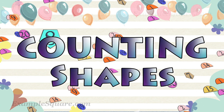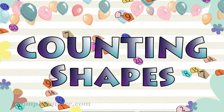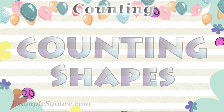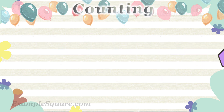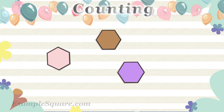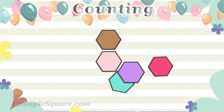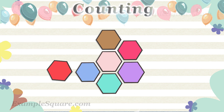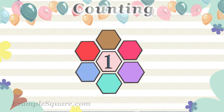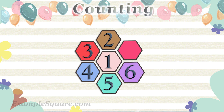Counting shapes. How many hexagon shapes are there? One, two, three, four, five, six, seven. There are seven hexagon shapes.